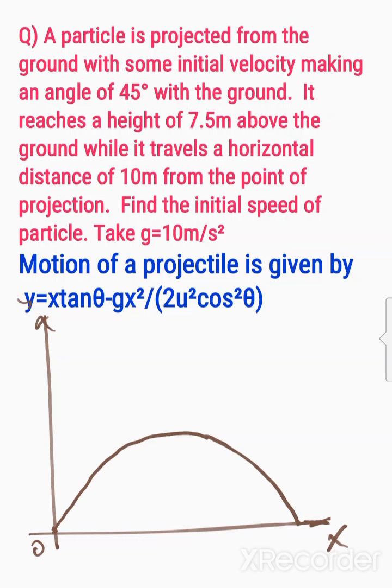A particle is projected from the ground with some initial velocity, making an angle of 45 degrees with the ground.